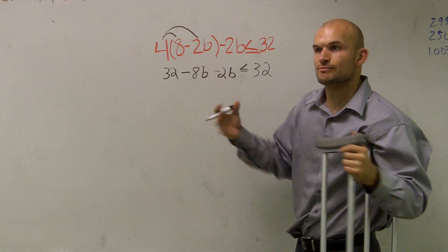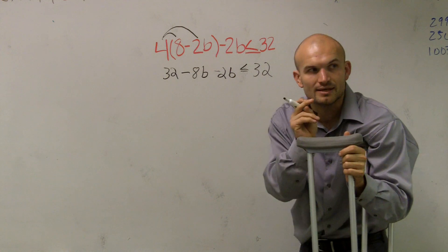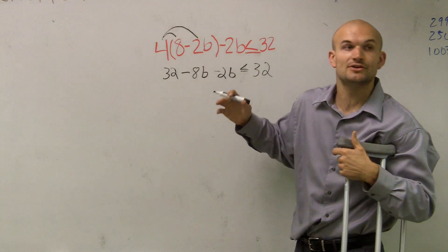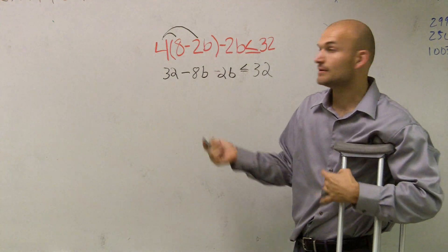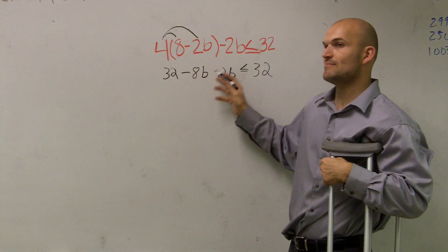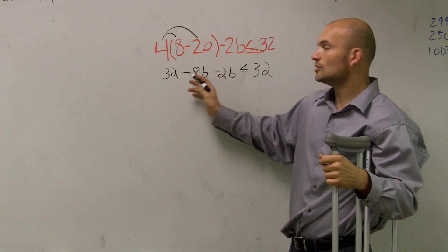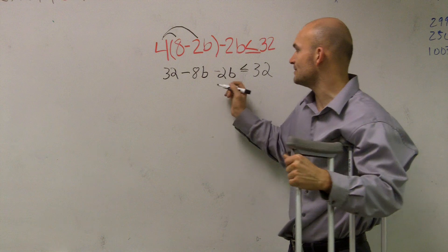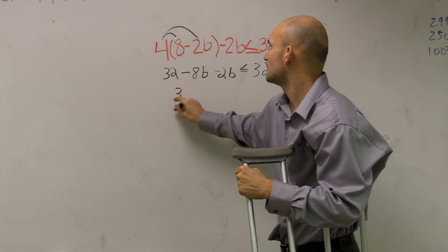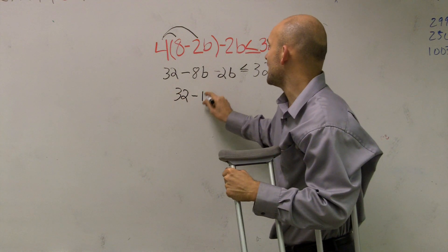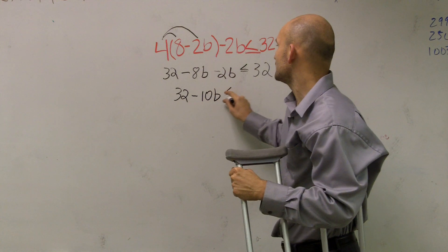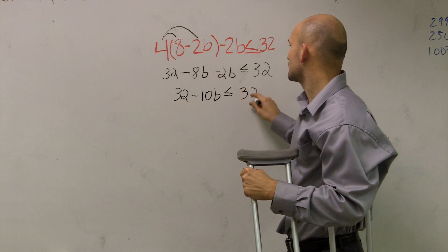So now, if you guys look at this, remember we always want to solve for one b. So if I have two of them, I either need to combine them somehow, right? So we can say negative 8b minus 2b. Well, negative 8 minus 2 is going to be negative 10b. So that's 32 minus 10b is less than or equal to 32.